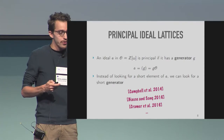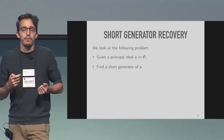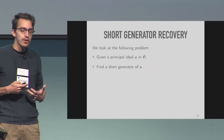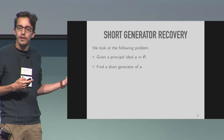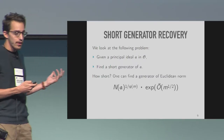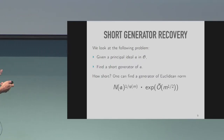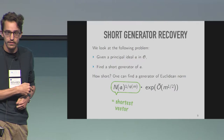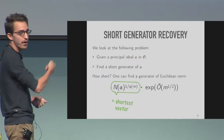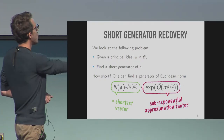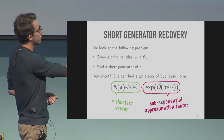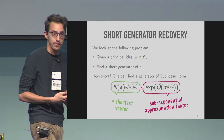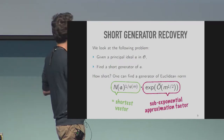You're given a principal ideal A and you look for a short generator of A. You want it to have Euclidean norm equal to a certain quantity where on the left you have essentially the length of the shortest vector of the lattice, and what remains is the approximation factor — a sub-exponential quantity in the dimension. This is a two-step process.